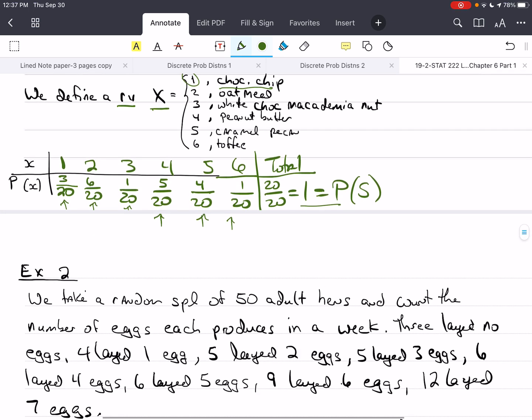Let's take a different example now. We're going to take a random sample of 50 adult hens, which are female chickens, and count the number of eggs that each produces in a week, 7 days. We have that 3 laid no eggs, 4 laid 1, 5 gave 2, 5 had 3, 6 of them had 4, 6 of them had 5, 9 had 6, and 12 had 7.